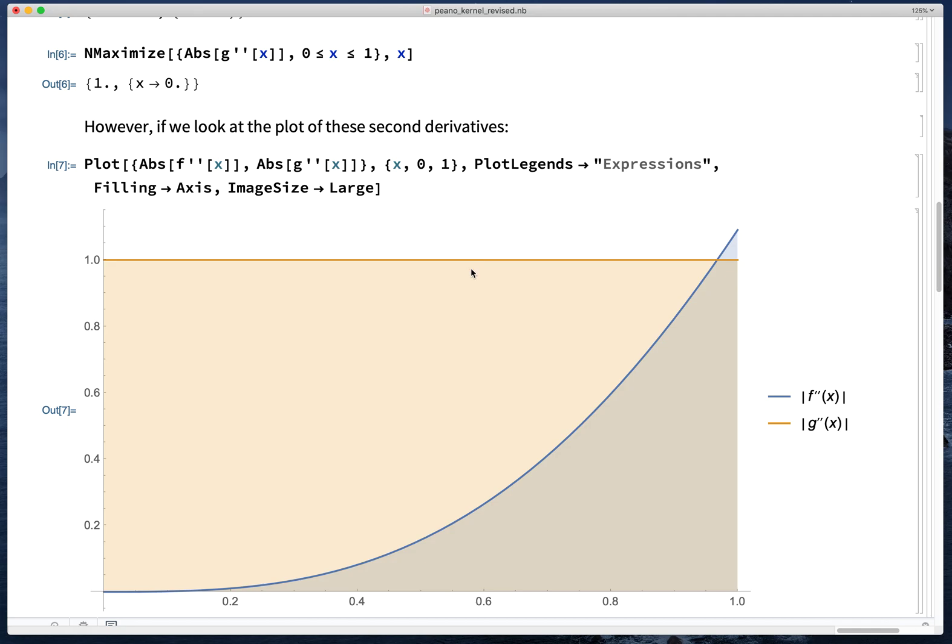And the question is, if the maximum value of the second derivative controls the error, then both of these will have about the same error in the trapezoid rule approximation. If it's something more like the average value of the second derivative, the actual error in the trapezoid approximation to the integral of f ought to be better than the actual trapezoid error in the approximation of g.